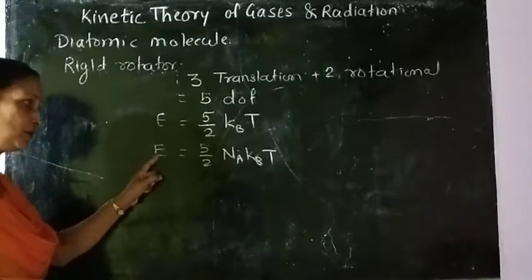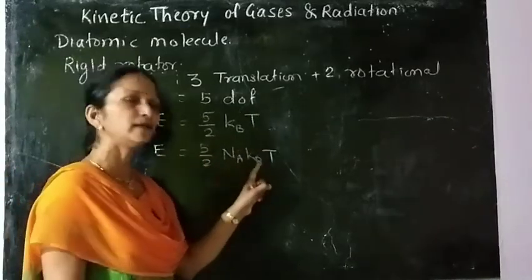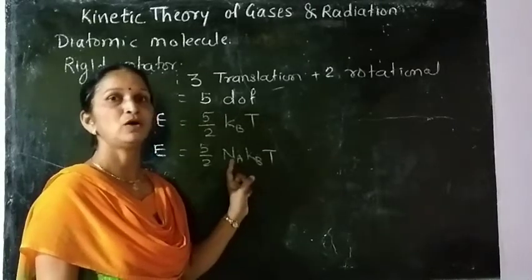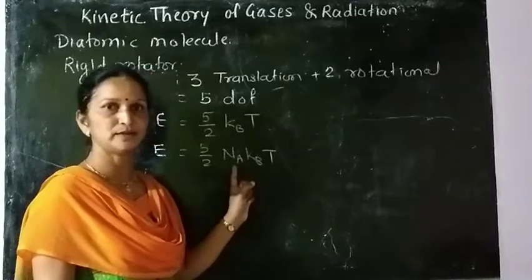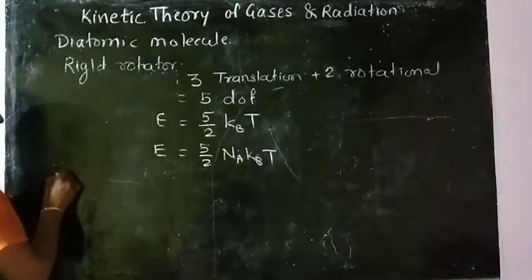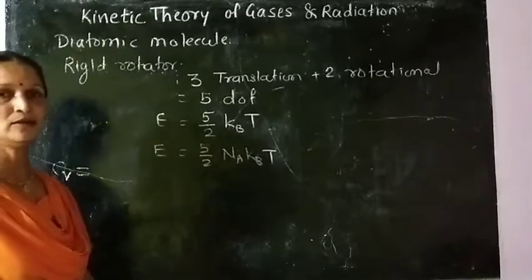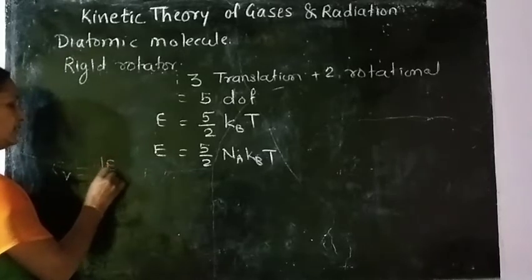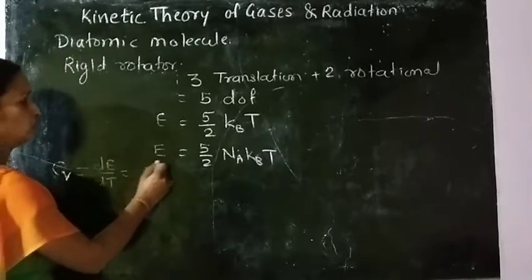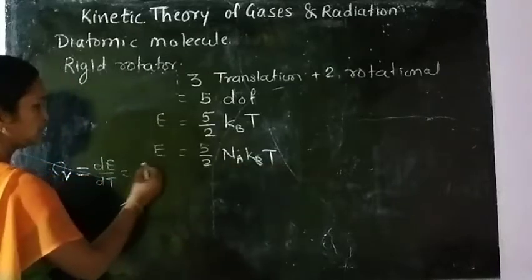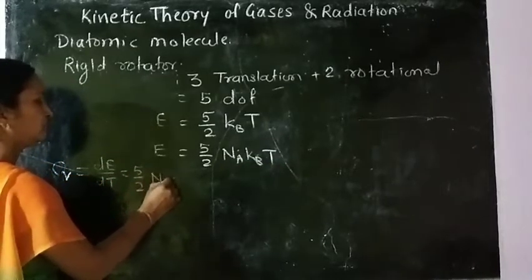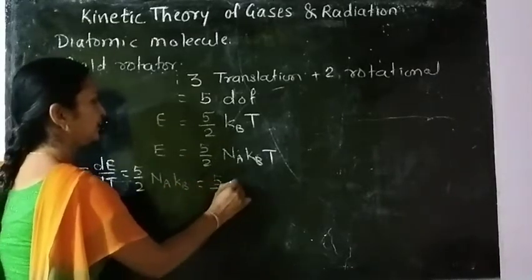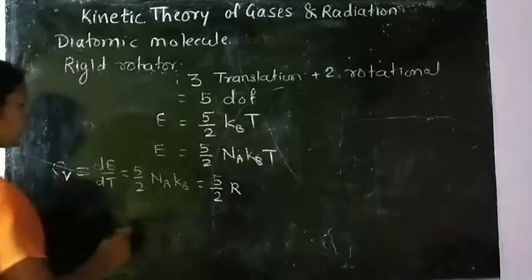The average energy per mole is 5/2 N_A k_B T, since we multiply by N_A, the number of molecules per mole. C_V = dE/dT = 5/2 N_A k_B = 5/2 R.